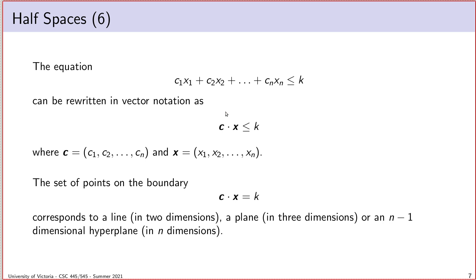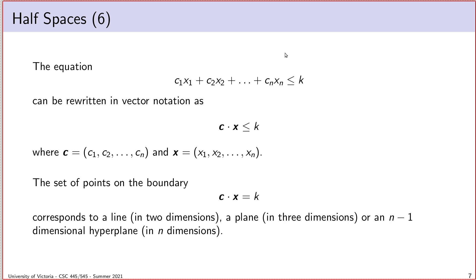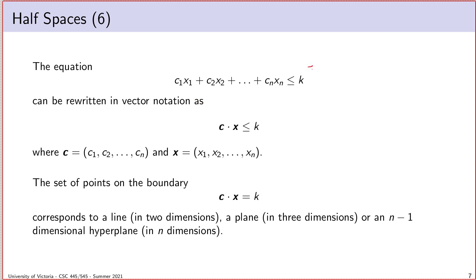If I have this linear combination c1x1 plus c2x2 up to cn times xn, the only variables expected to change are the x variables. So I'll separate them into two vectors: a vector c of all the constants and a vector x of all the optimization variables. I can then observe that this linear combination is just their dot product, so I can rewrite the linear inequality using this vector notation. The set of points on the boundary are those where the inequality is met at equality — and you might recognize that as defining a hyperplane.